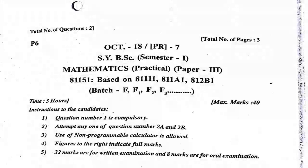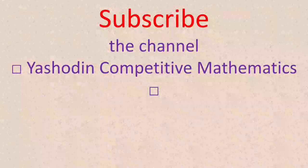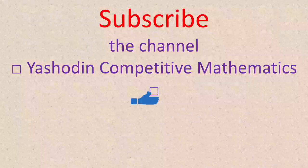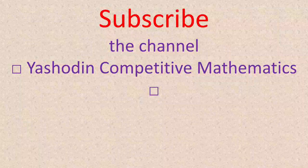Instructions are given. Question number 1 is compulsory. Attempt any one out of questions 2A and 2B. Use of non-programmable calculator is allowed. Figures to the right indicate full marks; 32 marks are given for written examination and 8 marks are for oral examination. If you have not subscribed the channel yet, please subscribe Assuring Competitive Mathematics and press the bell icon for getting updates.